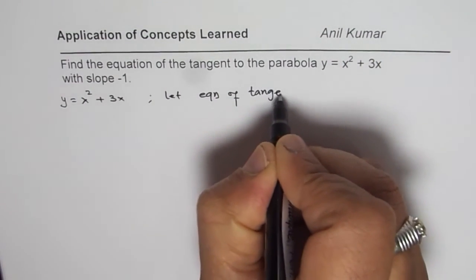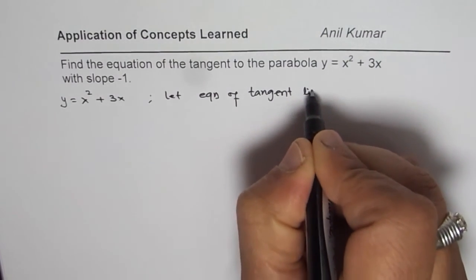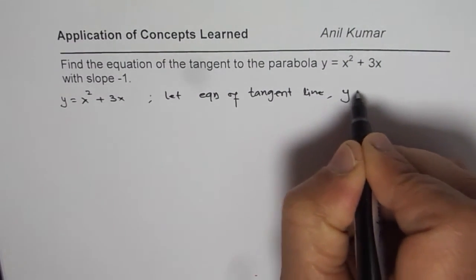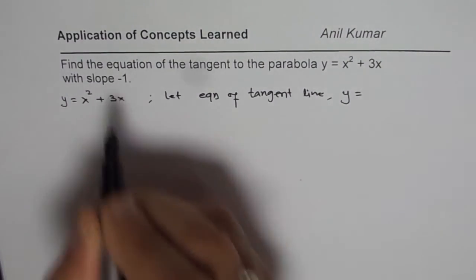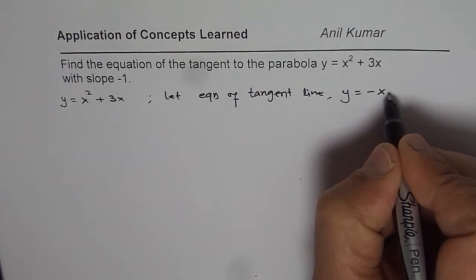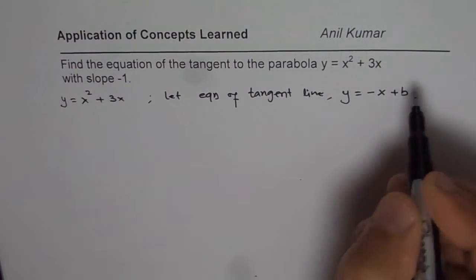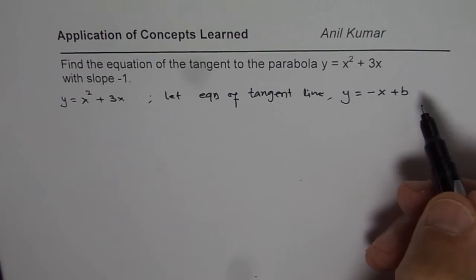y equals to, slope is minus 1, so write minus x plus b, right? So, basically we need to find b to get the answer, right?